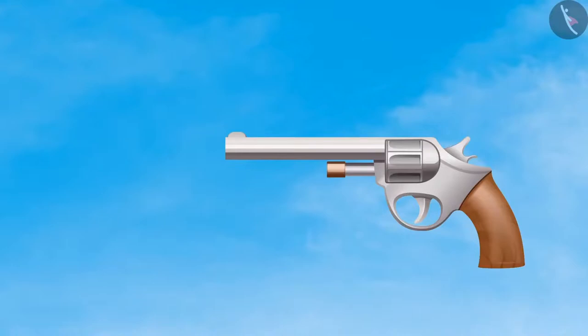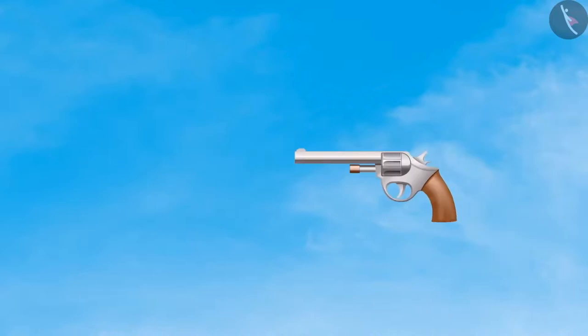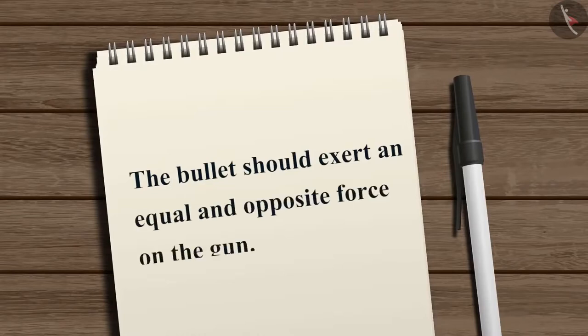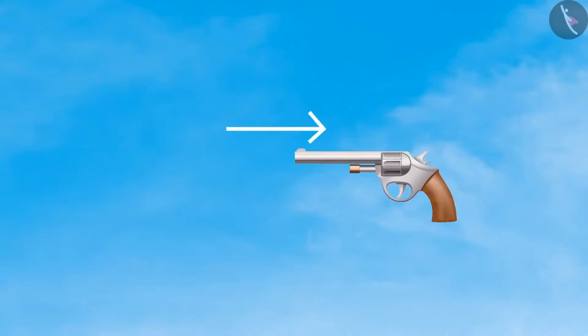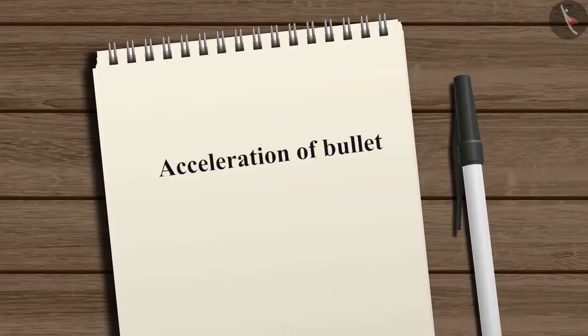Consider the case of firing a gun. The gun exerts a force on the bullet in the forward direction when it fires. According to the third law, the bullet exerts an equal and opposite force back on the gun, resulting in the recoil of the gun. However, the mass of the bullet is much smaller than the mass of the gun, so the acceleration of the bullet is much greater than the acceleration of the gun.